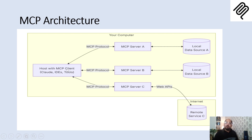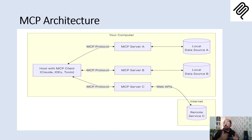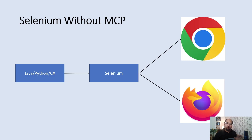How it works is the MCP client first needs to register or establish a connection with a particular MCP server, which further has integration with the data source. When the MCP client makes a call to the MCP server, we will be able to fetch data from the local data source. For example, we have a user story on a Confluence page — we can read that user story and generate our Gherkin or test cases.